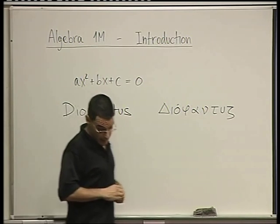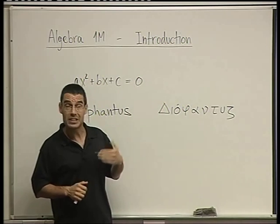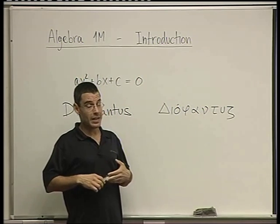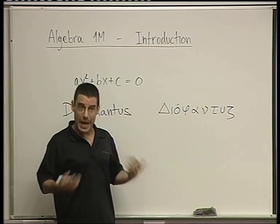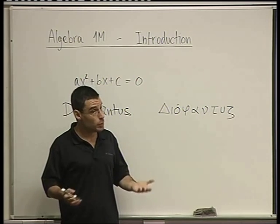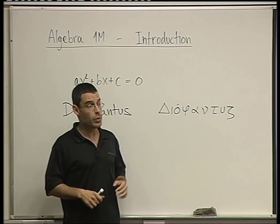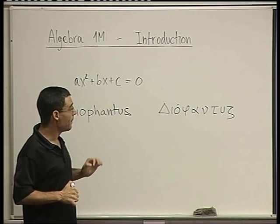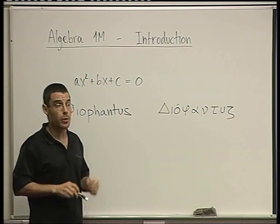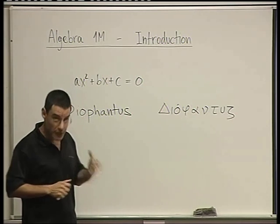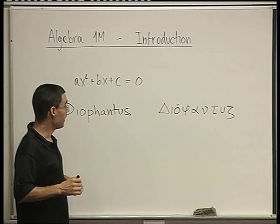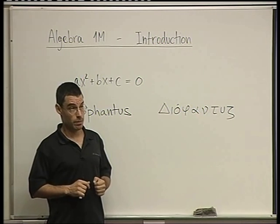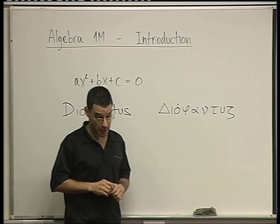Later on, more towards the 19th century, these techniques, these algebraic techniques, were expanded to more abstract structures, like groups, rings, and fields. We're going to discuss these lightly in this course. We're going to briefly mention what groups are. We're going to discuss fields with a bit more detail. But modern algebra is actually abstract in nature. Modern algebra is really an abstract topic, very abstract.